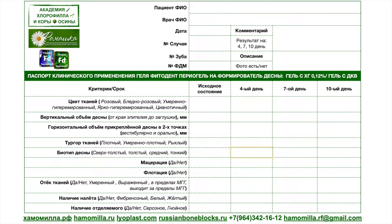Сегодня мы показываем кусочек исследования по использованию геля с хлорогексидином. Оцениваемые показатели: цвет тканей, вертикальный объём в миллиметрах от края эпителия до заглушки, горизонтальный объём прикреплённой десны — мы меряем его в двух точках, вестибулярно и орально. Также оценивается тургор тканей, который измеряется обратной стороной зонда нажатием на внутреннюю манжету посередине.